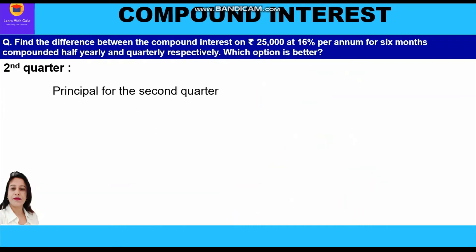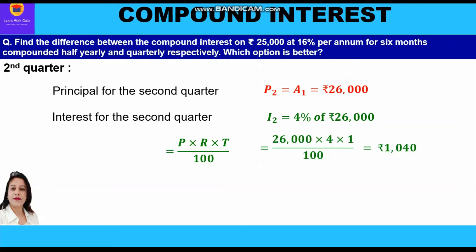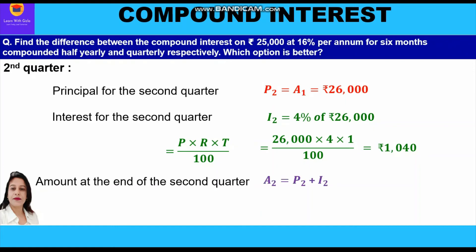In the second quarter the principal is Rs 26,000. Interest is calculated at 4% on Rs 26,000 using simple interest: PRT upon 100 = 26,000 × 4 × 1 ÷ 100 = Rs 1,040. Amount at the end of the second quarter is 26,000 + 1,040 = Rs 27,040.